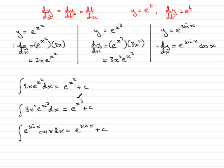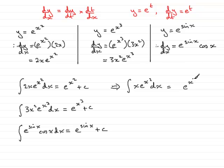Notice the pattern structure here. Suppose I had to integrate just e to the x squared dx — without that constant 2 out front. It would have come from differentiating e to the x squared, which gives 2x e to the x squared. Because there's no 2 in my integrand, I multiply by a half — a half times 2 is 1, so it cancels out — giving half e to the x squared plus c.